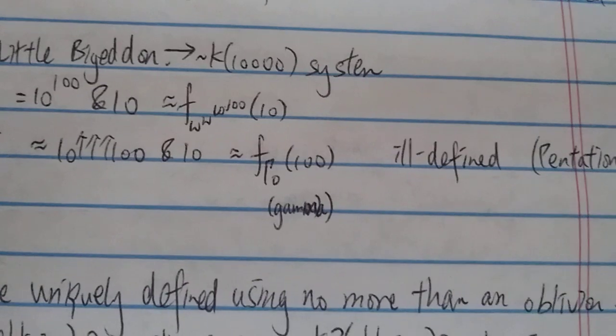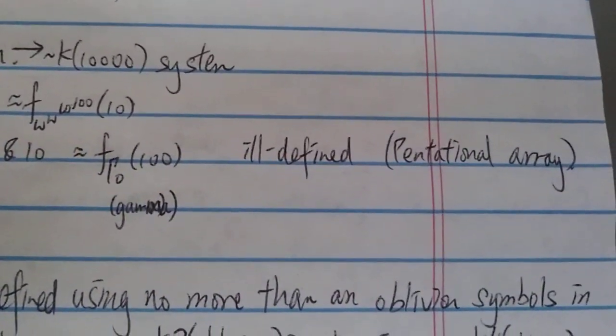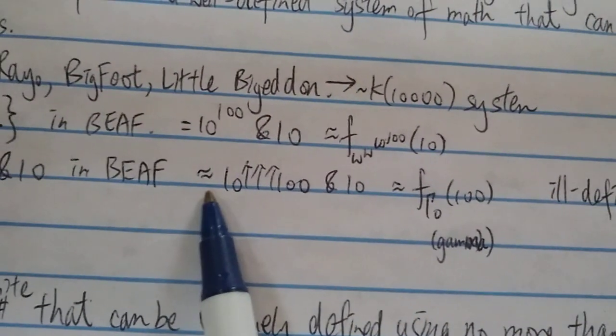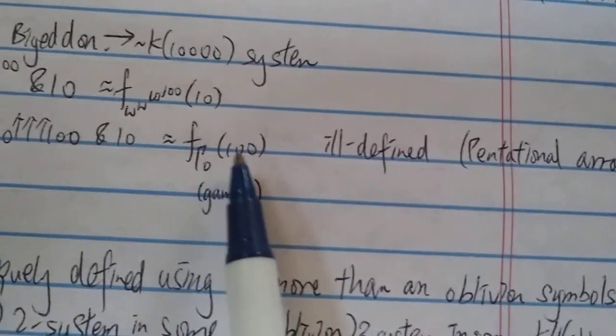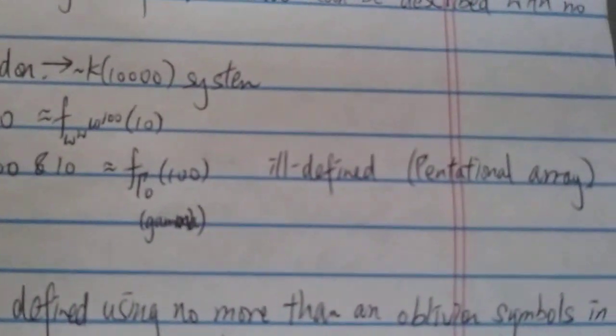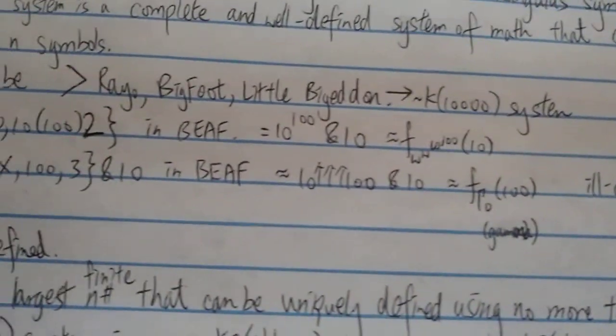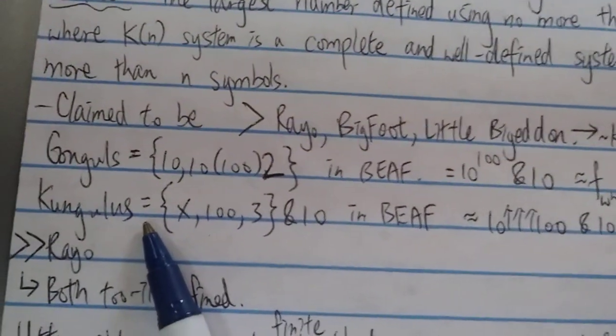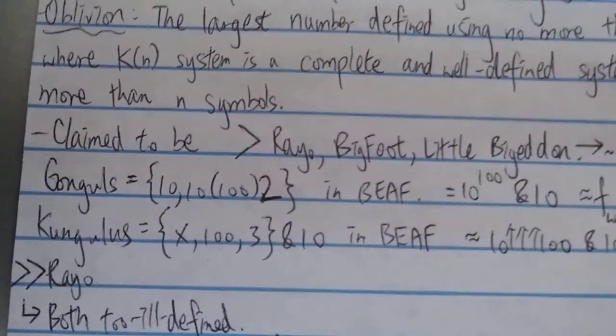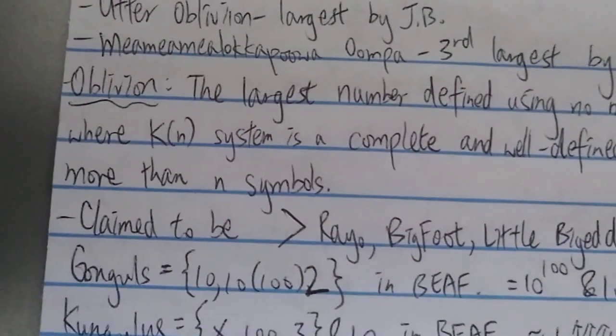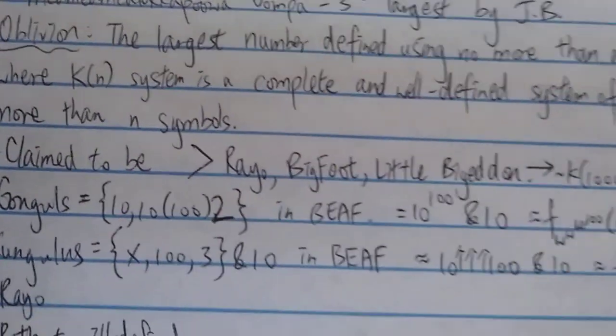And if you have studied, if you know BEAF, it's only well-defined up to the tetrational array level. Since this one is pentational level, pentational array, therefore this number is ill-defined because anything above tetrational is ill-defined. And since one of the numbers used to define oblivion is ill-defined, therefore this number you can automatically say it is ill-defined. But that's just the first part.